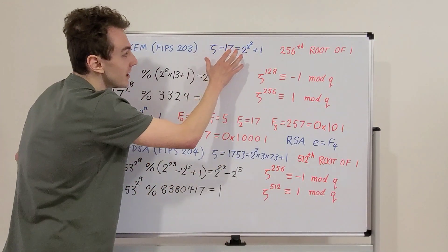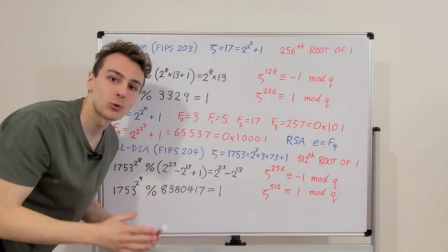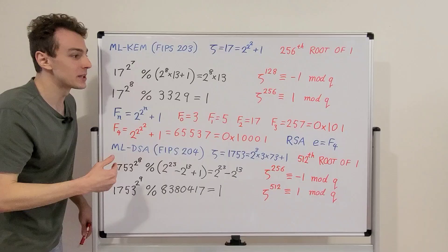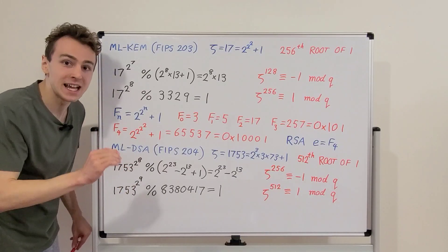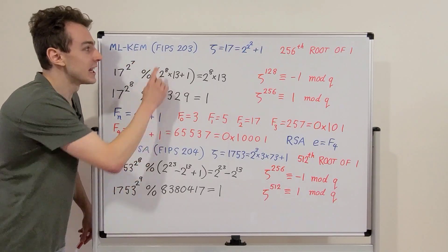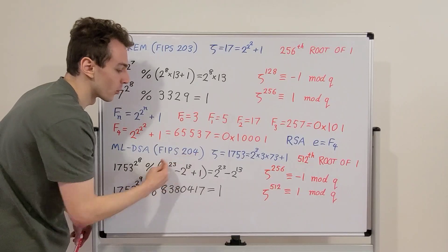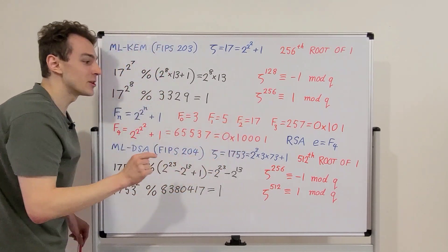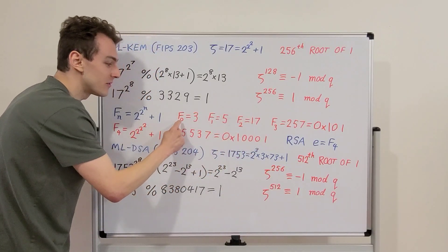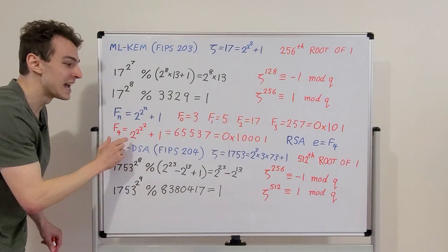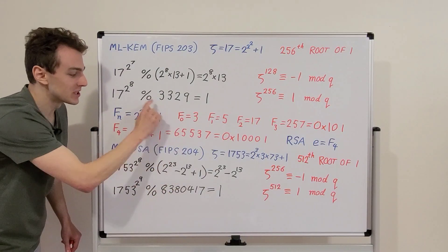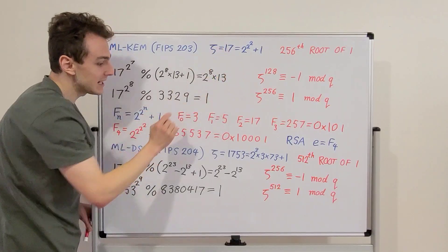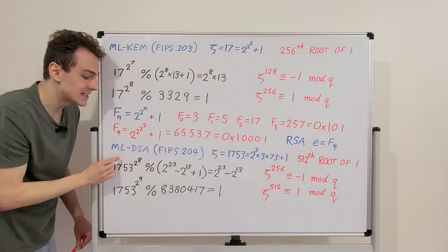The reason we introduce the parameter Zeta is to define the number-theoretic transform, called the NTT. This parameter is very important for defining the NTT, which will help us speed up computations and efficiently implement MLChem and MLDSA as described in FIPS 203 and FIPS 204. Note that the value of Zeta in MLChem is the same as F2 — a Fermat prime. All of F0, F1, F2, F3, and F4 are prime, though not all numbers of that format are. That is the description of the parameter Zeta, defined as 17 in MLChem and 1,753 in MLDSA, respectively.